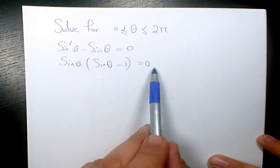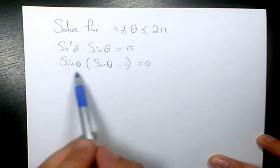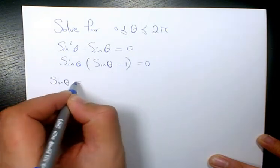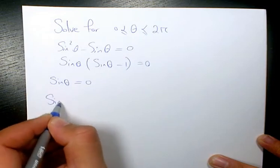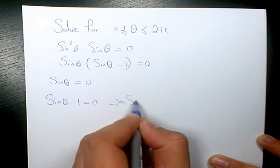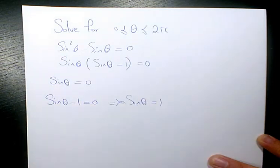So now the product of two expressions is 0, which means either this one is 0 or this one equals 0. So sinθ = 0, and sinθ - 1 = 0, which means sinθ = 1.